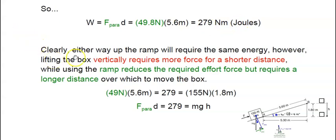So clearly, either way you move, whether it be up the ramp or along the diagonal, you will use the same amount of energy. However, if you lift the box vertically, you require more force for a shorter distance. You have to lift the whole weight of the box all the way straight up to the high point B to acquire 279 joules. However, if you use the ramp, you only have to push with 49.8 Newtons of force for a much longer distance of 5.6 meters.